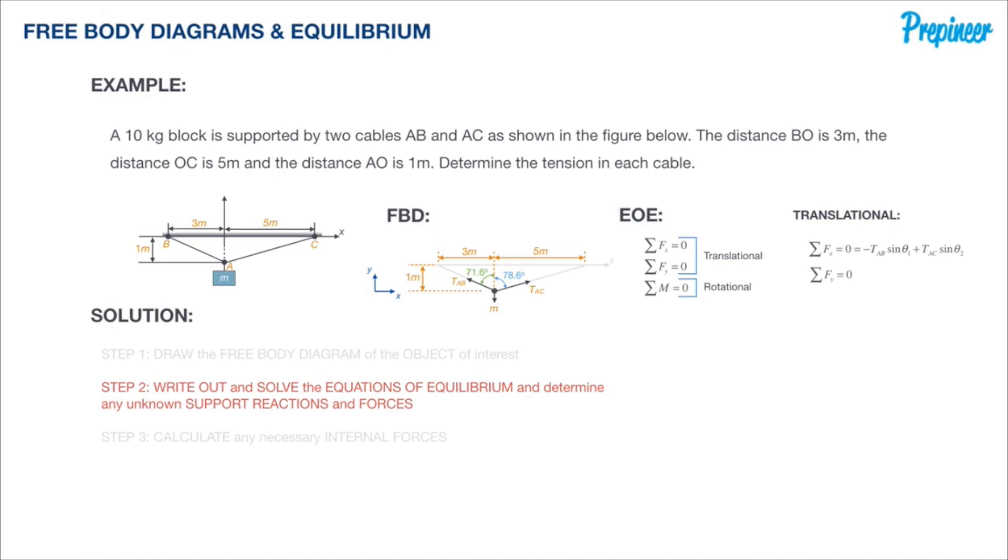I'm going to get an equation equal to negative T_AB sine theta 1 plus T_AC sine theta 2. When I do the same for all of our y components, these are all the components running along our y-axis.